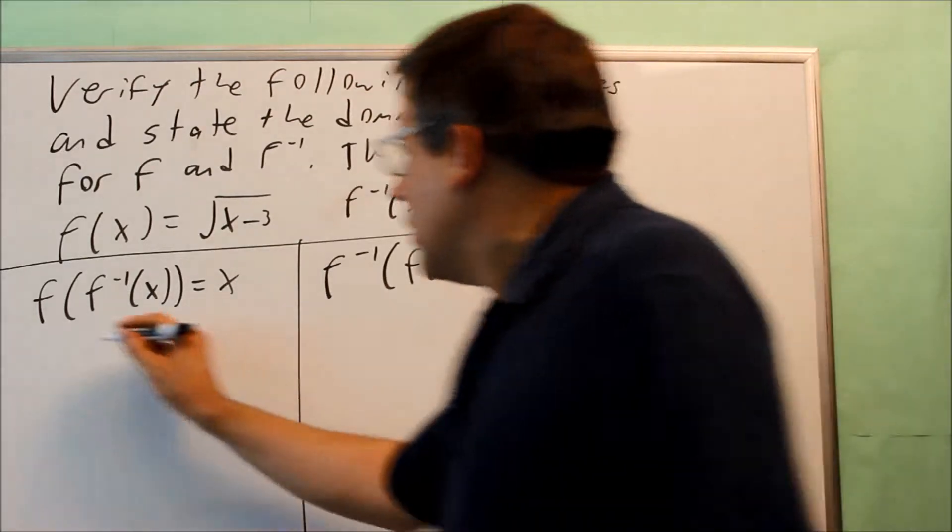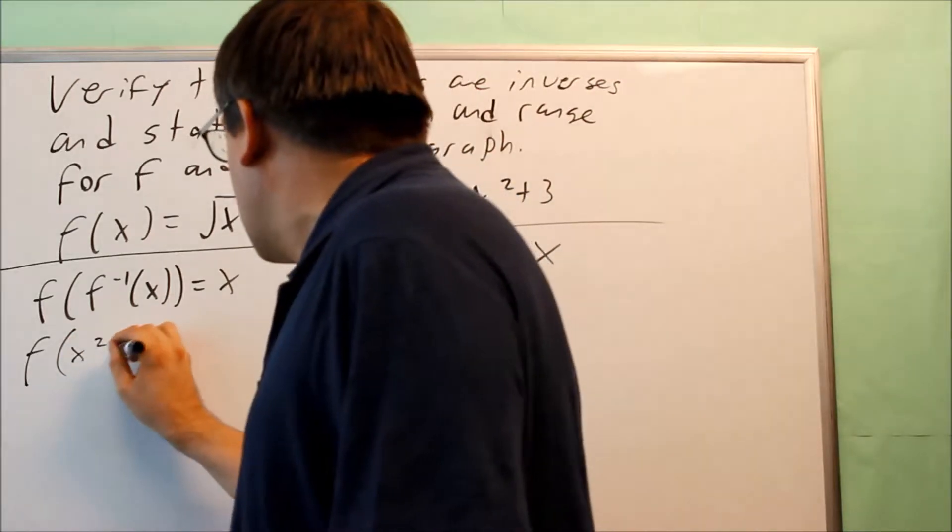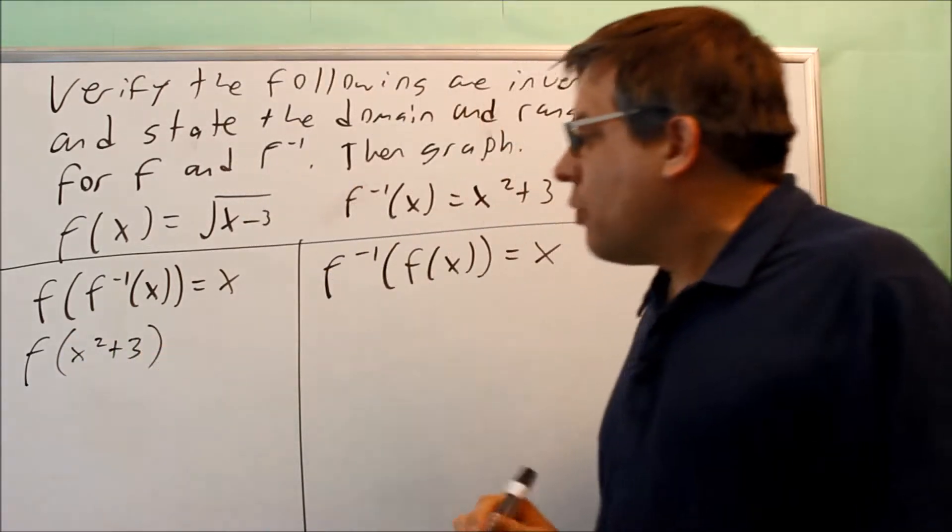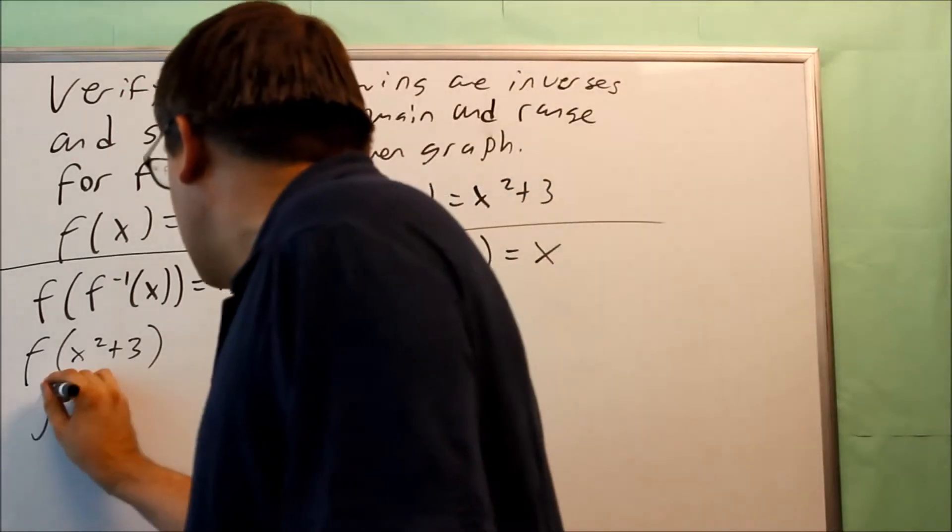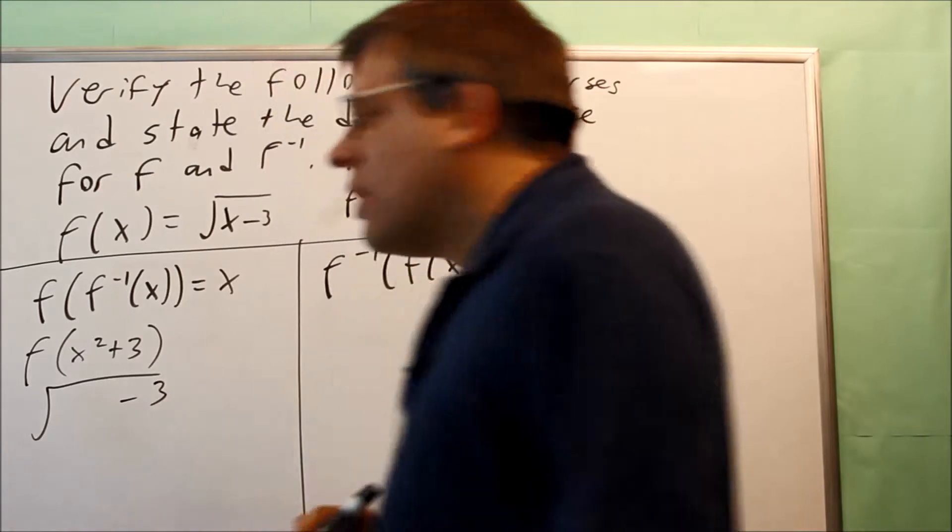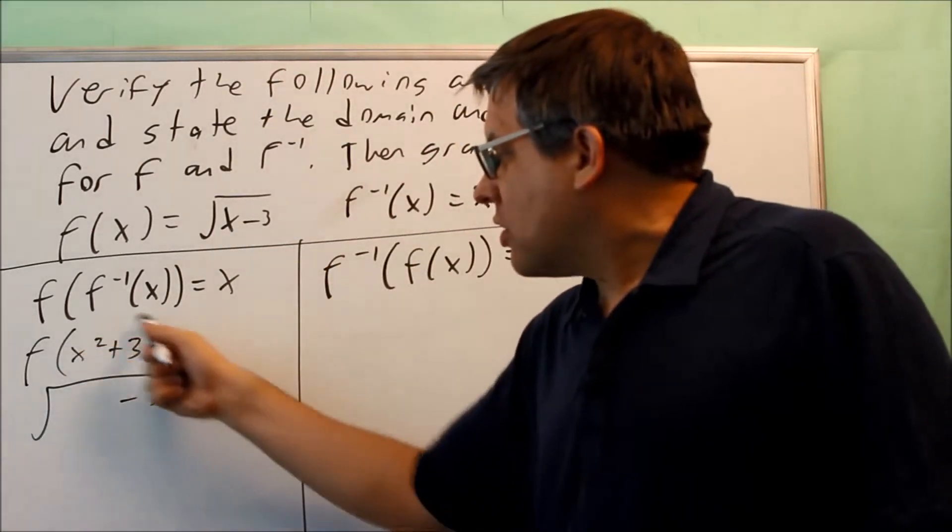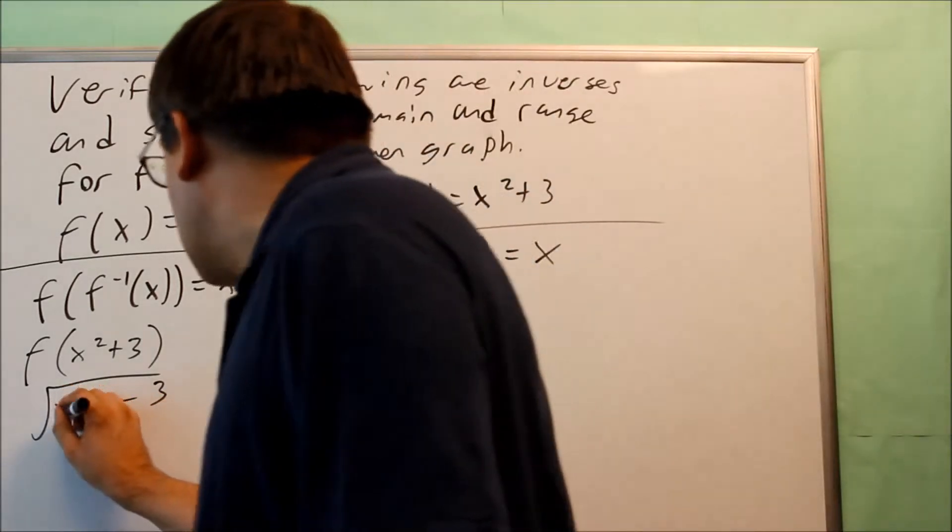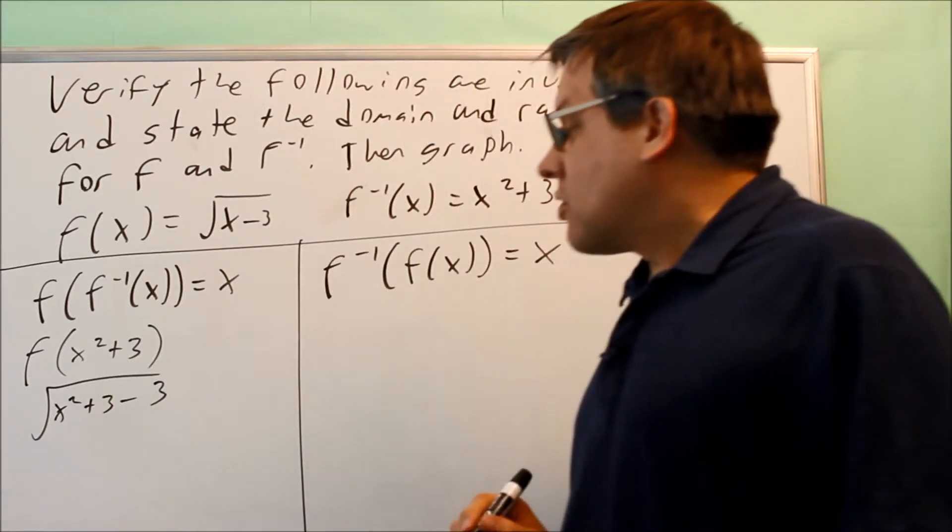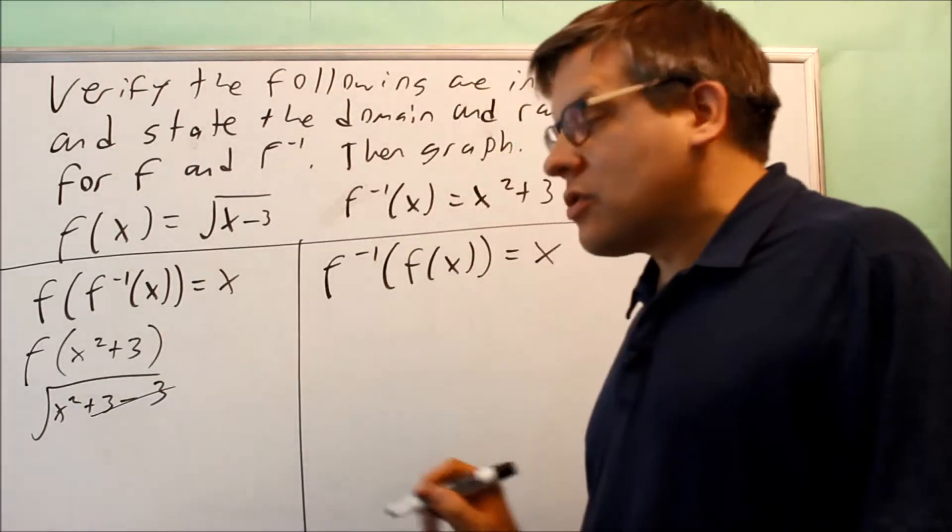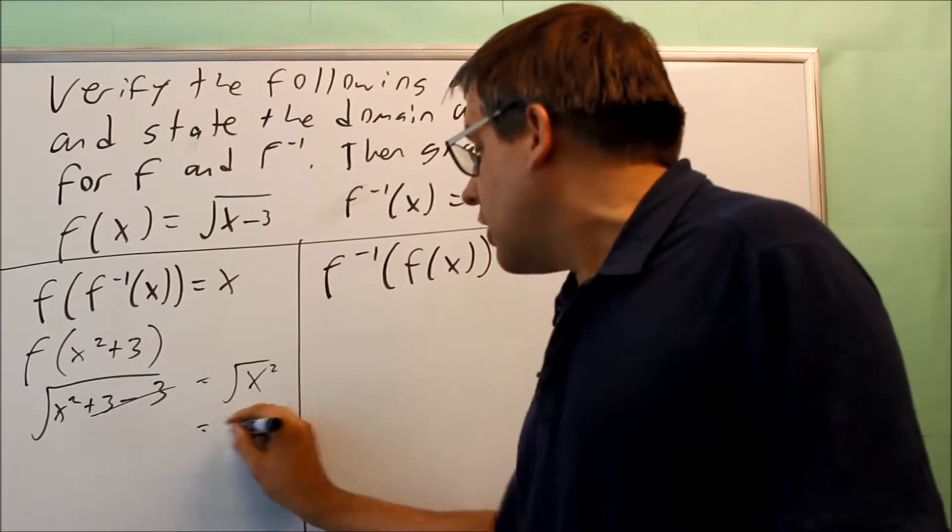So for this one, you start by putting in the inverse inside the parentheses. The inverse here is x squared plus 3. We need to put this inside this one. So we'll first start by doing the template. Now the template says that we have something and then minus 3. So I've removed the x from here. I'm going to replace it with what I have inside the parentheses. That's going to be x squared plus 3. So x squared plus 3 minus 3, the two 3's, those are going to cancel.